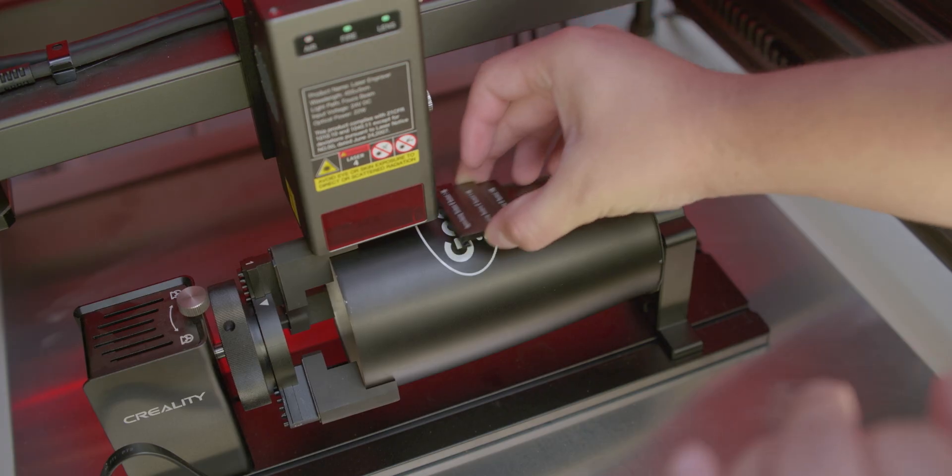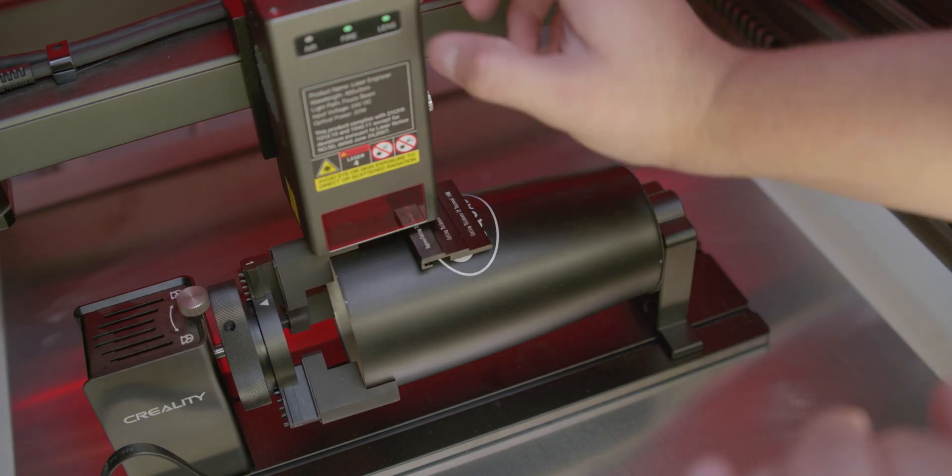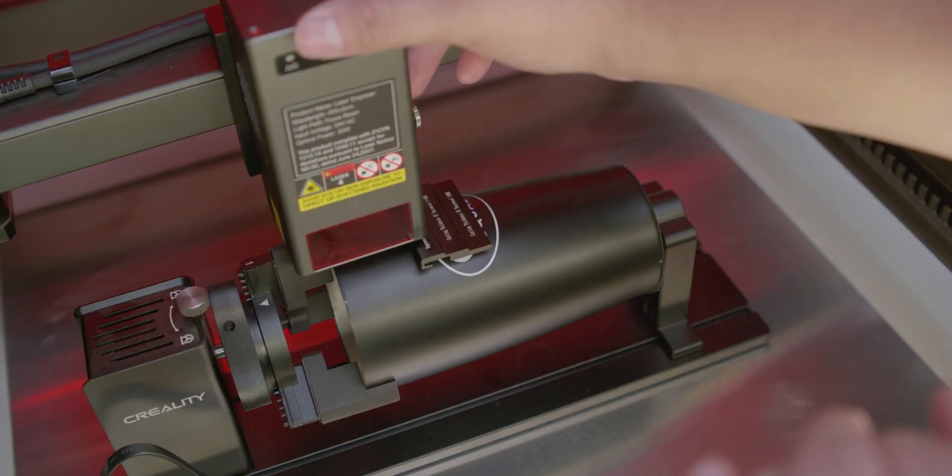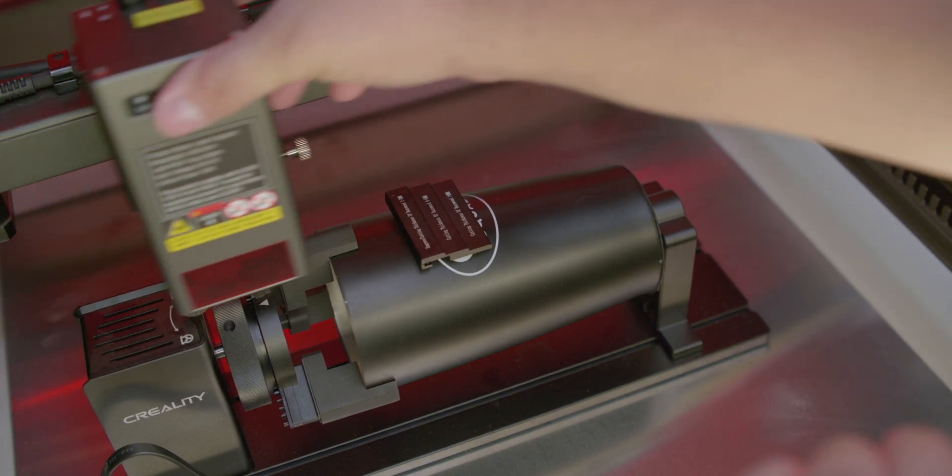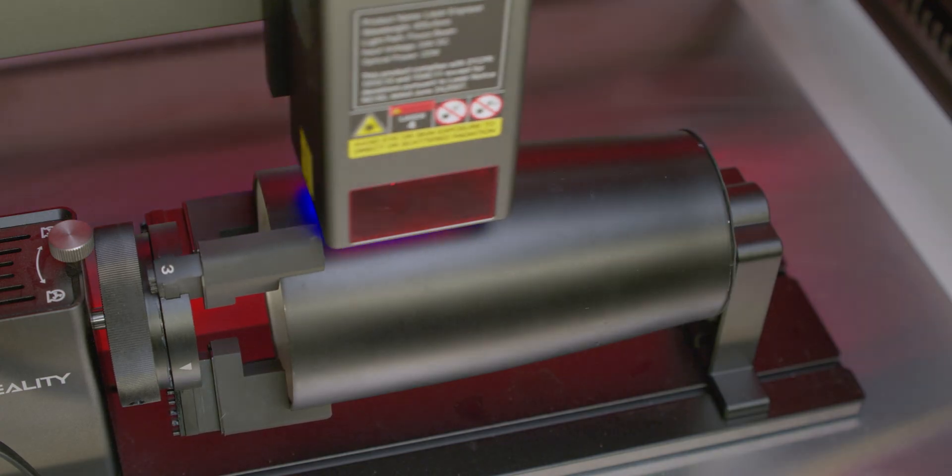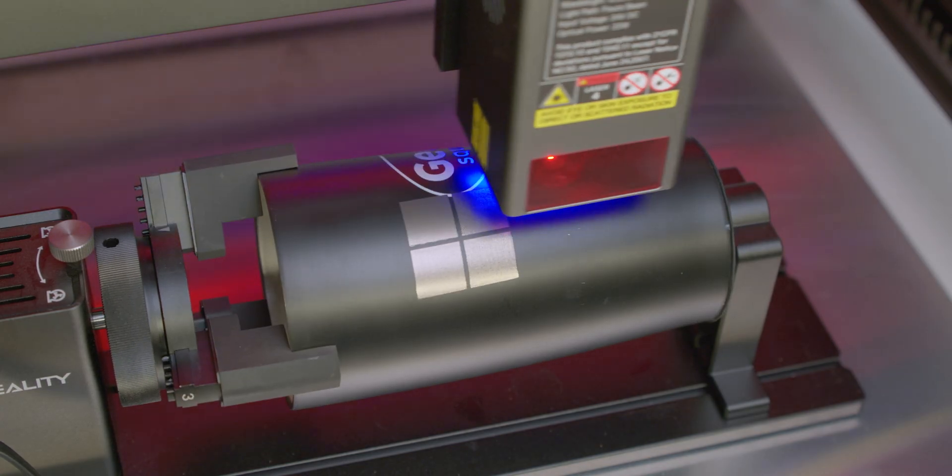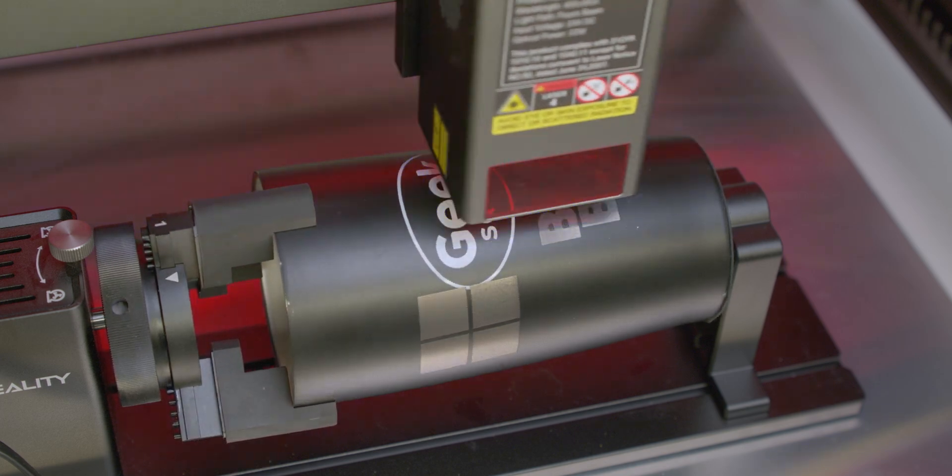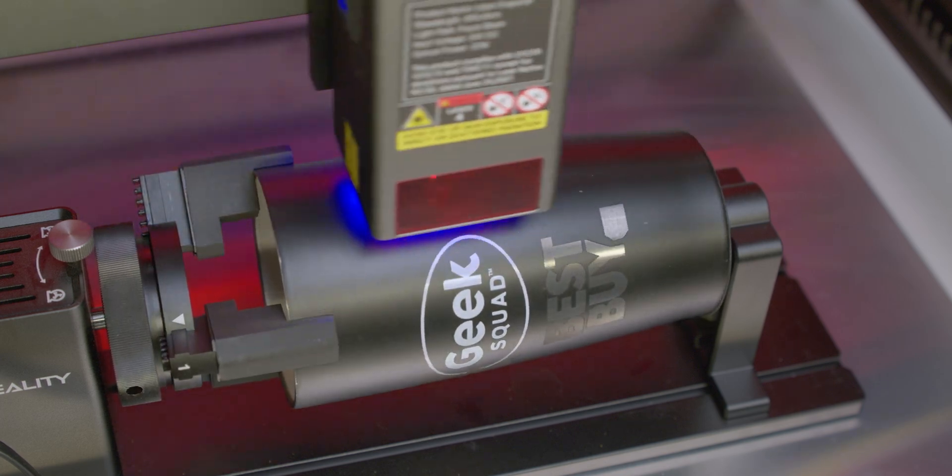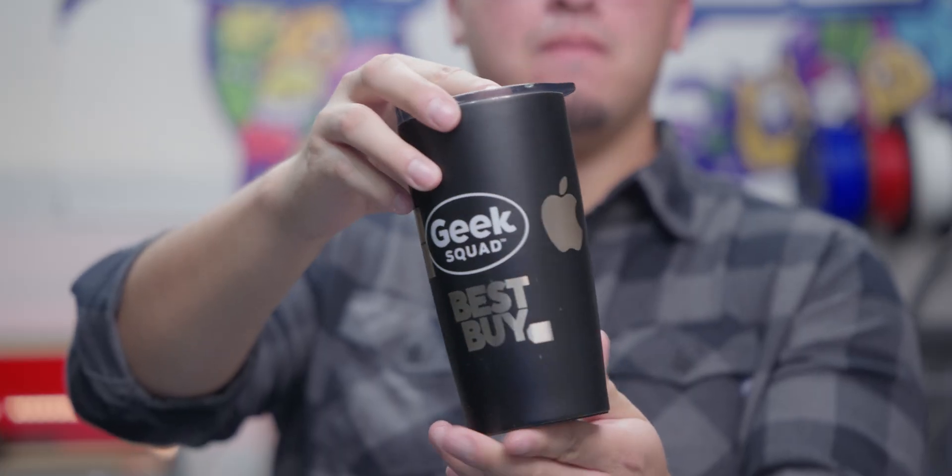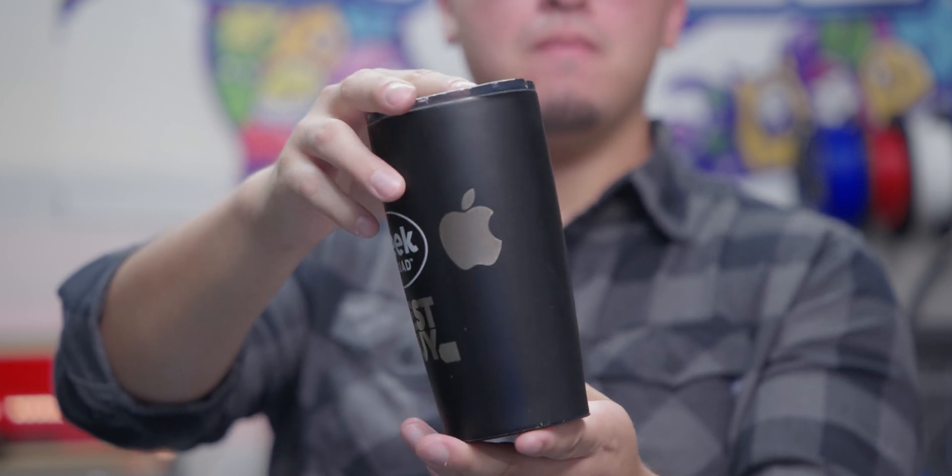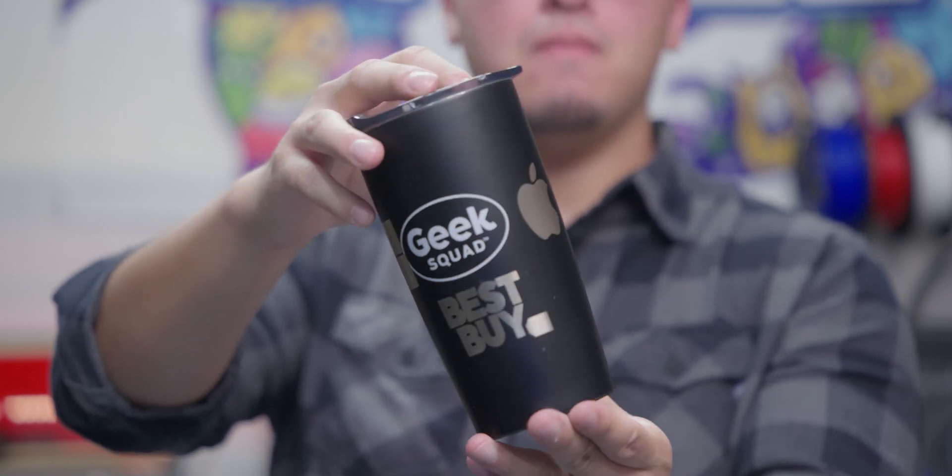The next test was engraving around a mug that has a logo, like this Geek Squad mug. I measured the circumference and length, made a design around the logo, leveled and framed the laser, and began the test. The overall engraving came out great but was just a bit off with the Microsoft logo—it went a bit over the Geek Squad logo. That's how important measuring and framing correctly is.